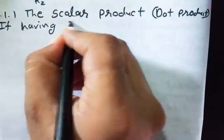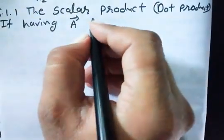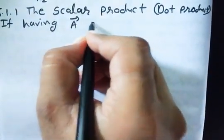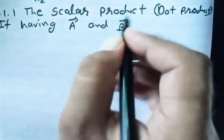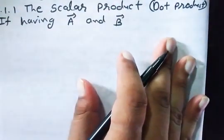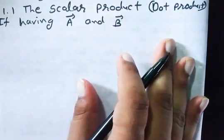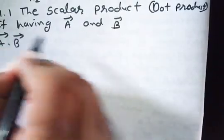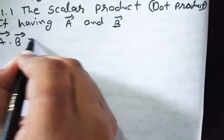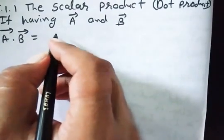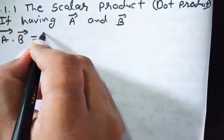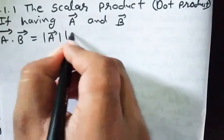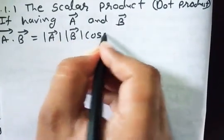So if I am having two physical quantities, first we call it vector A and vector B. If we want to do the scalar product of these two, then scalar product is: vector A dot vector B equals the mod of vector A times mod of vector B times cos theta.